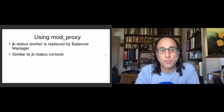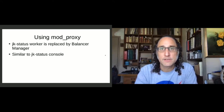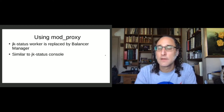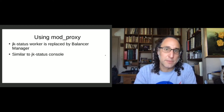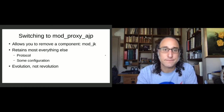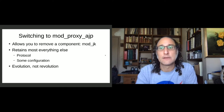The jk_status worker is replaced by the Balancer Manager. The Balancer Manager is part of mod_proxy_balancer, which is distinct from the protocol handler. With mod_jk, one module handles both proxying and load balancing, whereas in httpd those are done by two separate modules: mod_proxy_balancer and mod_proxy_ajp.